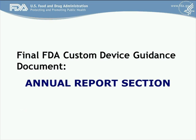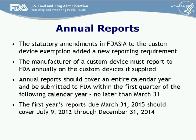Due to statutory amendments to the custom device exemption, manufacturers are now required to submit annual reports. The manufacturer of a custom device must report to FDA annually on the custom devices it has supplied. The annual report should cover an entire calendar year and be submitted to FDA within the first quarter of the following calendar year, no later than March 31st. The first year's report is due on March 31st, 2015, and should cover the period from July 9th, 2012 when FDASIA was enacted, through December 31st, 2014.